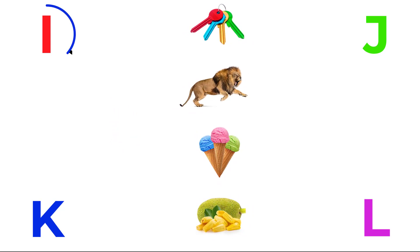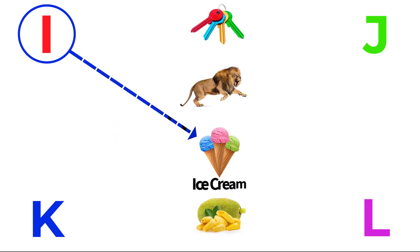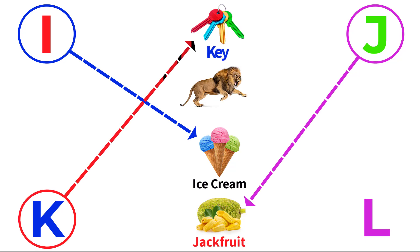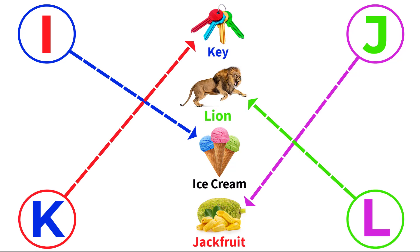I for ice cream, J for jackfruit, K for king, L for lion.